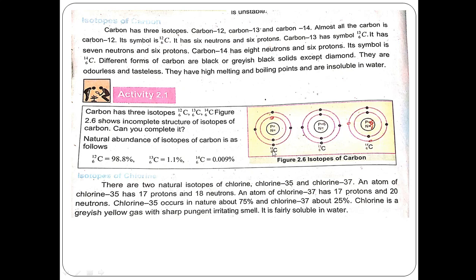Activity: for carbon-12 (atomic number 6, mass number 12): number of electrons = 6, number of protons = 6, number of neutrons = 6. For carbon-13: number of electrons = 6, protons = 6, neutrons = 7. For carbon-14: electrons = 6, protons = 6, and neutrons = 14 minus 6 = 8.